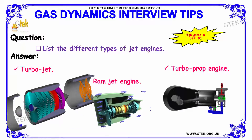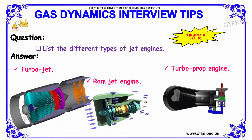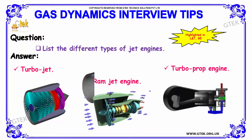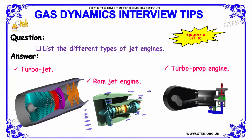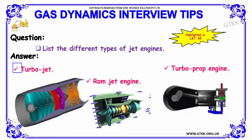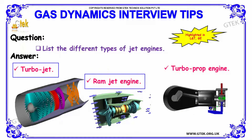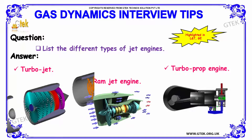Next question: list the different types of jet engines. The different types of jet engines are: first, turbojet; second, ramjet engine; and the final one is turboprop engine.